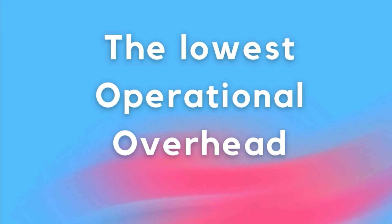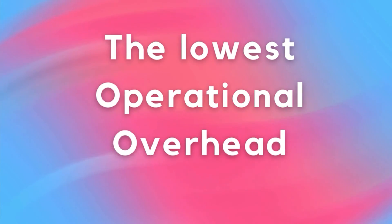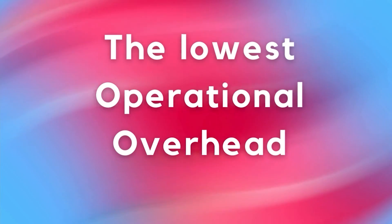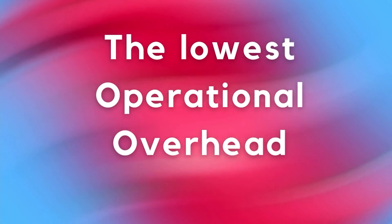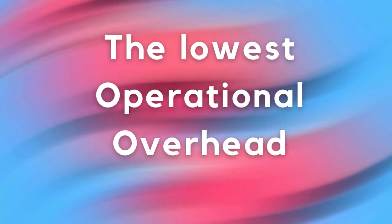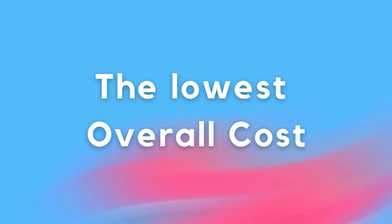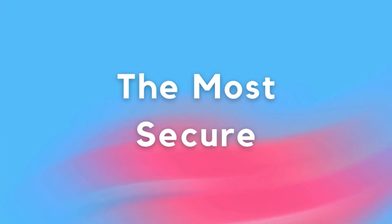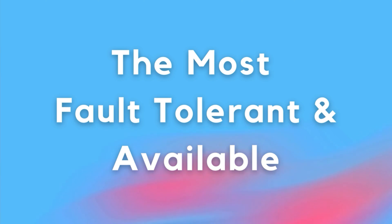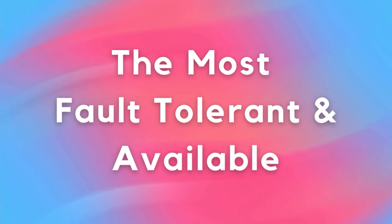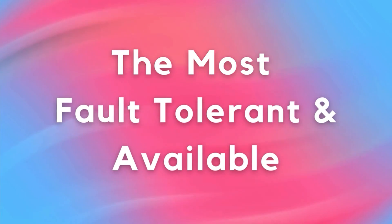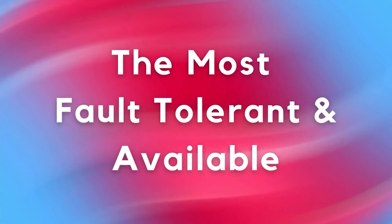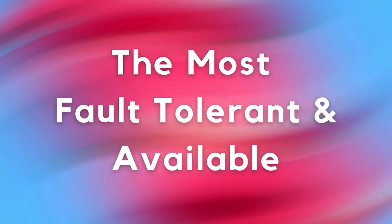Kicking us off, we have the lowest operational overhead, which effectively means what's the quickest and easiest way we can implement this with the least amount of effort and maintenance required. The lowest overall cost means the cheapest, and the most secure means, well, the securest. The most available and fault tolerant: is my service available when I need it to be, and can it withstand faults elsewhere in the network or the architecture?